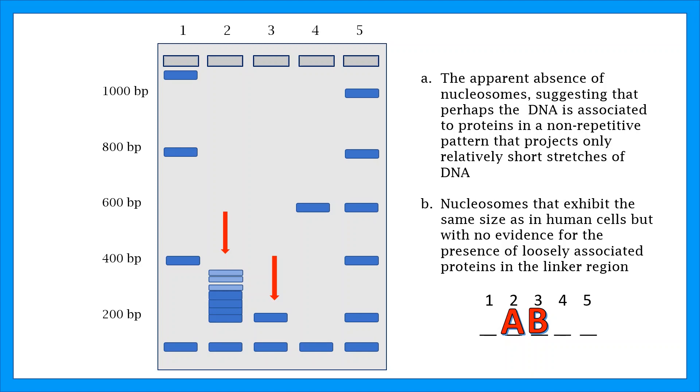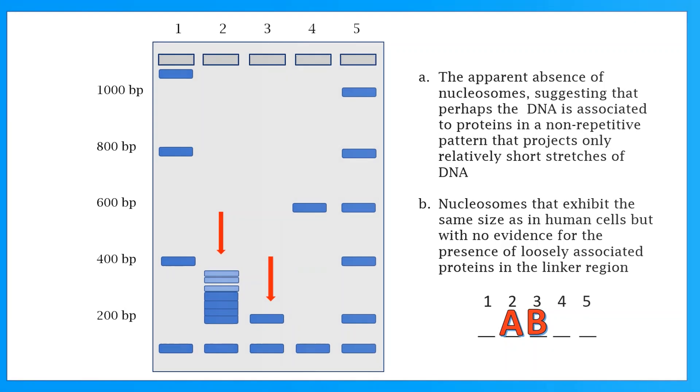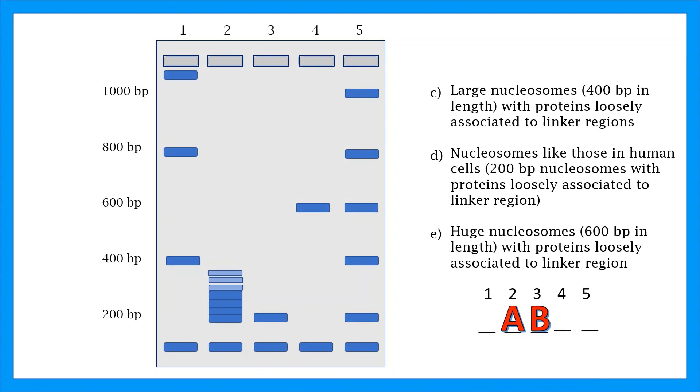C. Large nucleosomes, 400 base pairs in length, with proteins loosely associated to linker regions. The first row has nucleosomes that are 400 base pairs apart, so this one must be the correct choice.